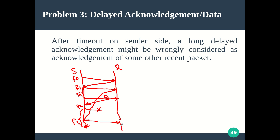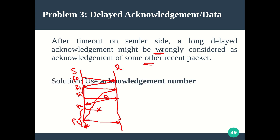This is a very crucial problem: the data is actually lost but neither sender nor receiver realizes it. The sender sends frame 3 next, and the receiver accepts it thinking it is the expected next frame. The data of frame 2 is silently lost. This happens because of the delayed acknowledgement — after timeout, a long-delayed acknowledgement is wrongly considered as an acknowledgement of a different, recently sent packet.